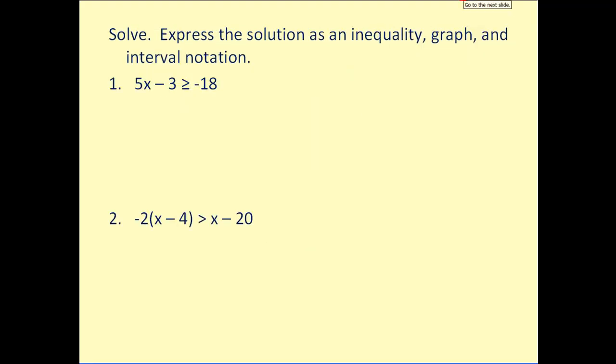Let's go ahead and try some of these. We're going to solve these just like they were equations except remembering if we multiply or divide by a negative, we have to reverse the symbol. So the first step here would be to add three to both sides. So we'd have 5x ≥ -15. Divide by 5, x ≥ -3. So here is our solution stated as an inequality.